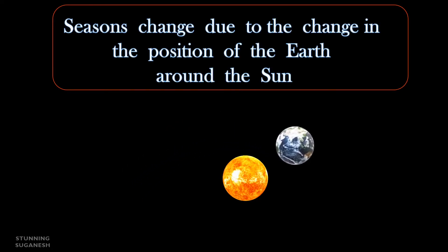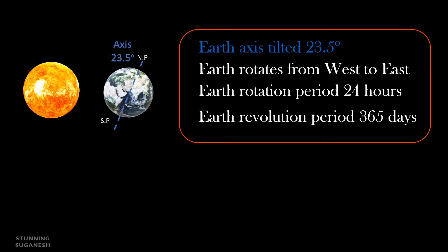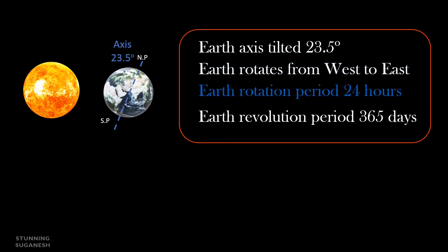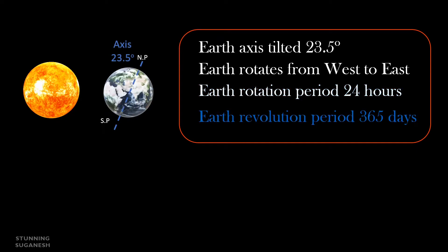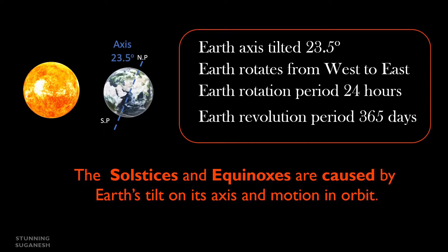Seasons change due to the change in the position of the Earth around the Sun. Earth's axis is tilted 23.5 degrees. Earth rotates from west to east. Earth's rotation period is 24 hours, and its revolution period is 365 days. The Solstices and Equinox are caused by Earth's tilt on its axis and motions of orbit.